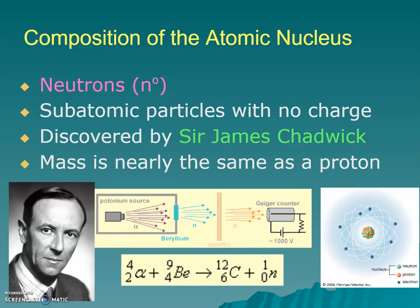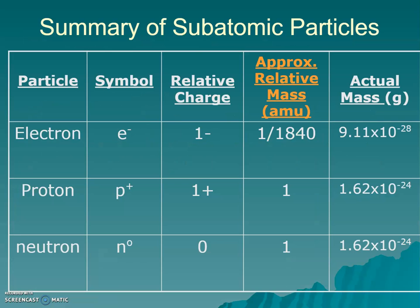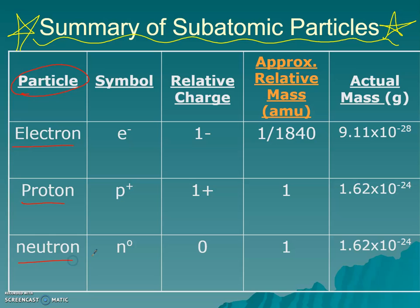So what you should do is really focus on this slide right here. Star, circle, highlight this. This is super important because this summarizes all of those subatomic particles. So this is going to take a look at each of our particles, the electrons, the protons, and the neutrons. It talks about their symbols.